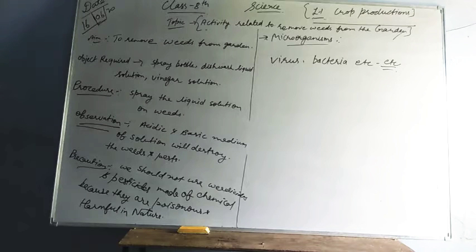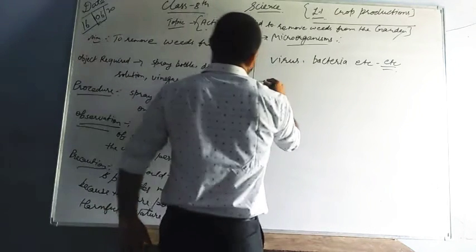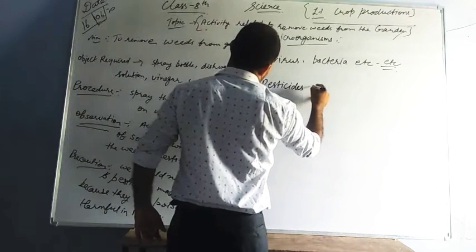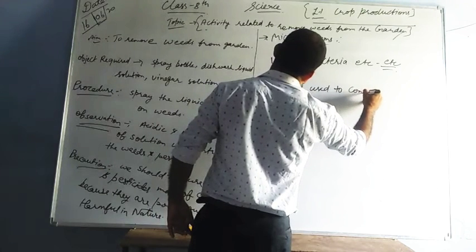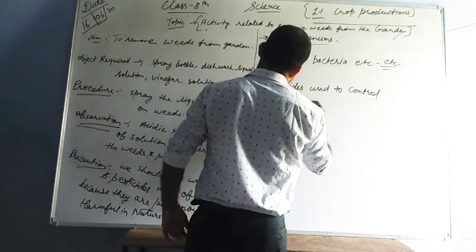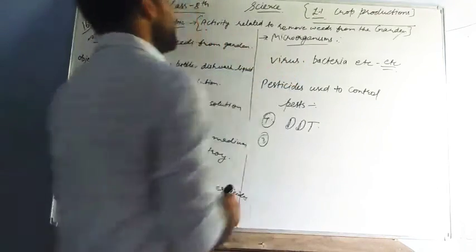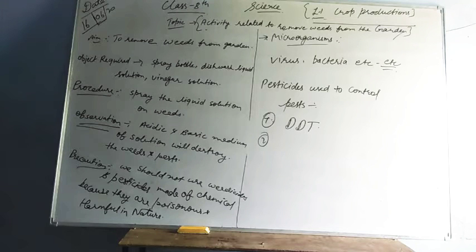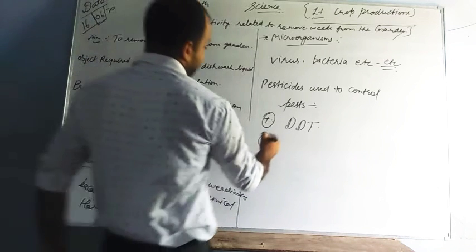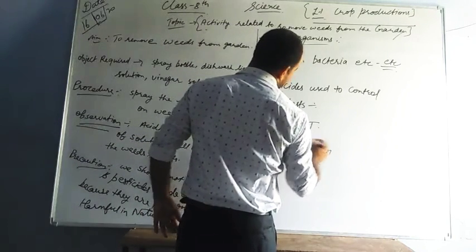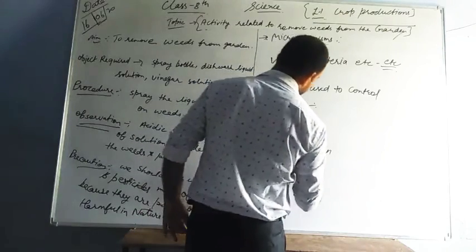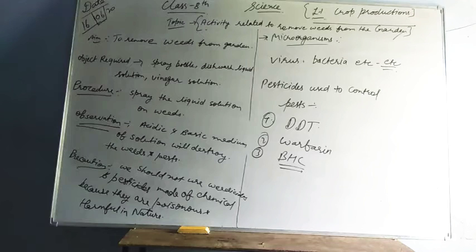The pesticides used to control pests are: number one — DDT, which destroys the pests that are harming crops; number two — BHC (also known as Malathion); and number three — BHC. So these are the pesticides which we use to control the pests that are destroying our crops. Try to learn them also.